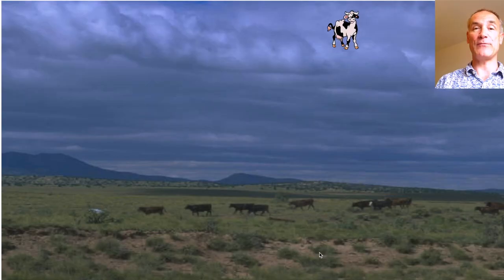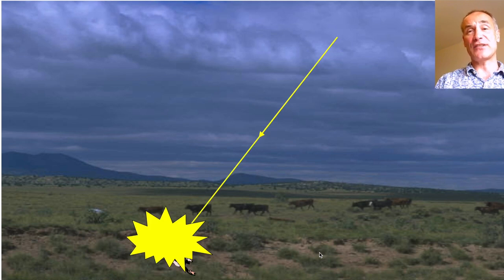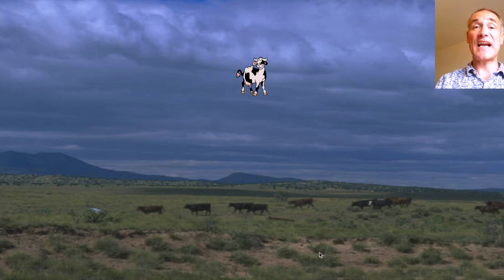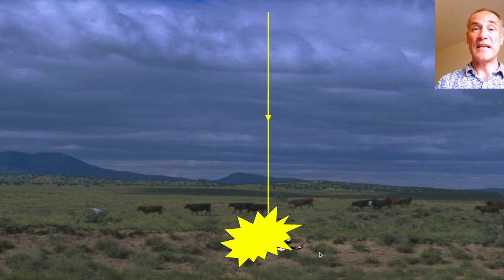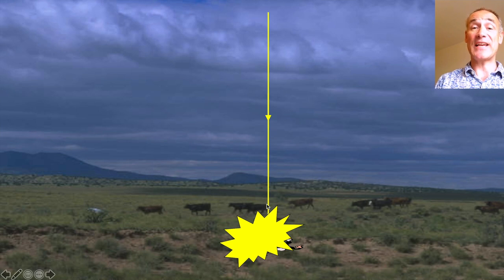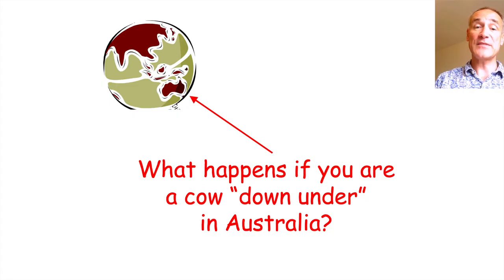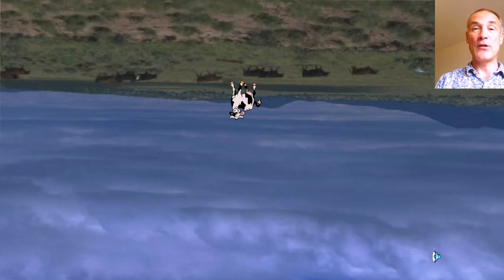Let me give you an example. If we dropped a cow out of the sky we wouldn't expect it to move sideways — we would expect the cow to fall straight down. This is because of a gravitational field, and you can see this is what's called a field line. It shows the direction in which the cow experiences the force. So what happens if we drop the cow down under in Australia? Well it will fall straight down there instead.